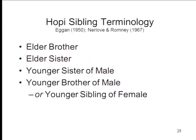As an example, Hopi Indian sibling terminology distinguishes between an elder brother, an elder sister, the younger sister of a male, the younger brother of a male, and the younger sibling of a female — five sibling categories that don't necessarily have counterparts in other cultures. Hopi language has words for these. We can recognize the distinctions, but we don't have words for them. They do. It's a category they use to divide up their social world.